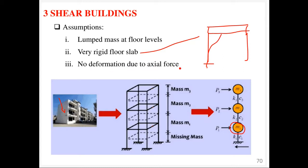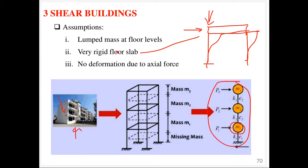Third, there is no deformation due to axial force. Axial force is the force coming from above — vertical. The horizontal force is the lateral force. This means only horizontal deflection is allowed, like what we have been tackling in the single degree of freedom case. The restoring force due to spring stiffness — F = KU — is only provided by the columns, and the mass lumped at the floor levels provides the inertial effect.